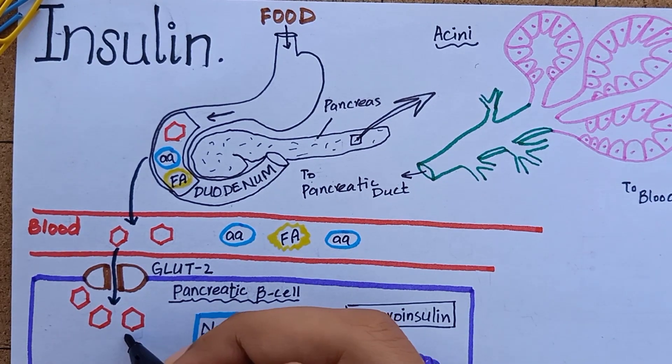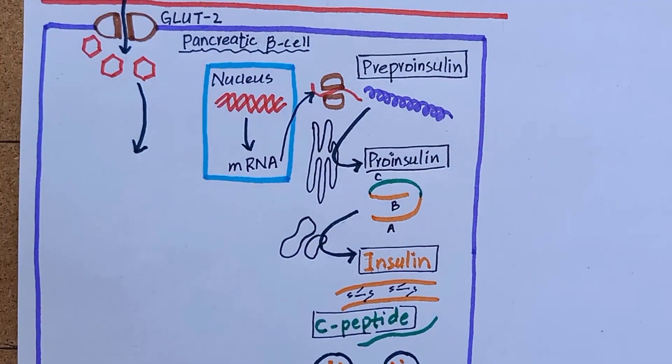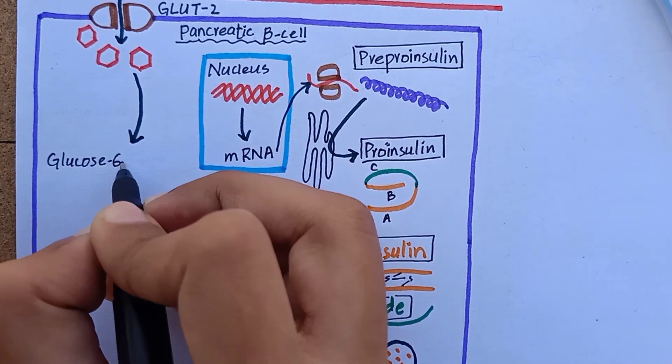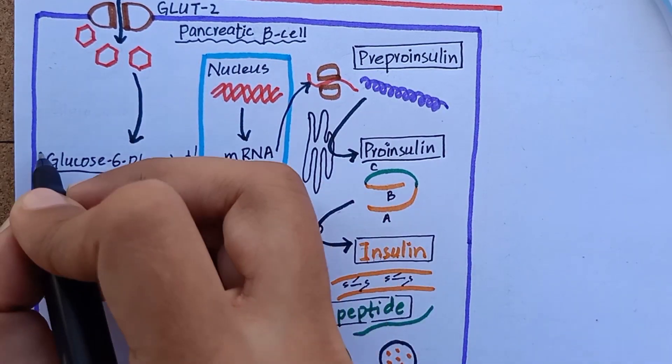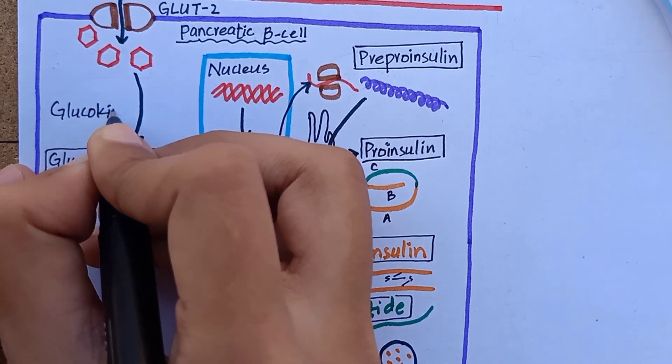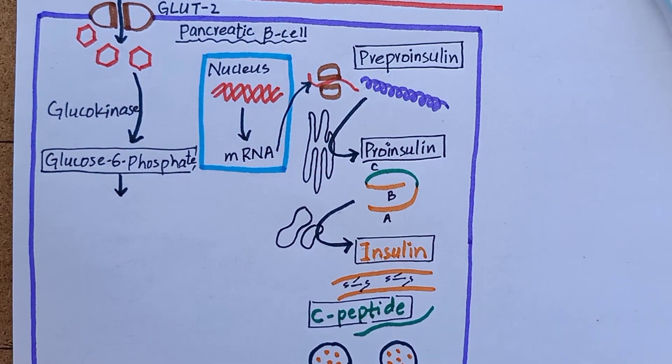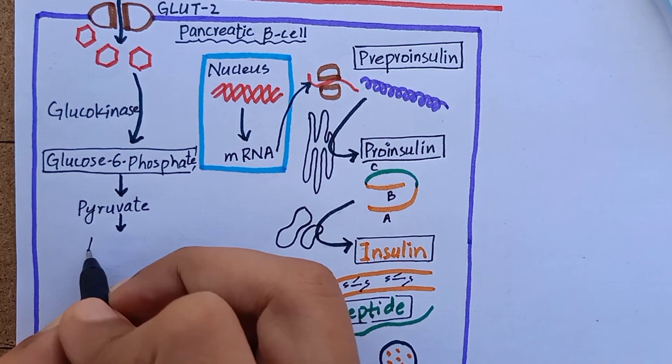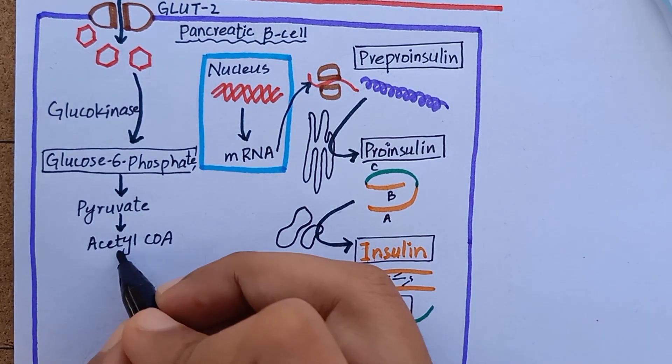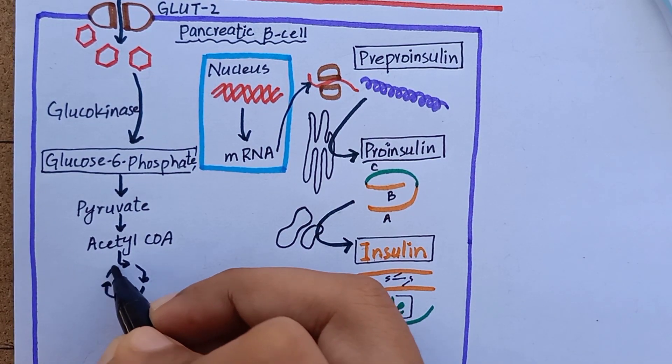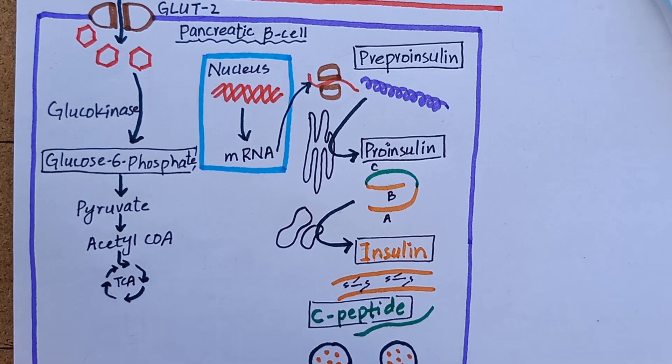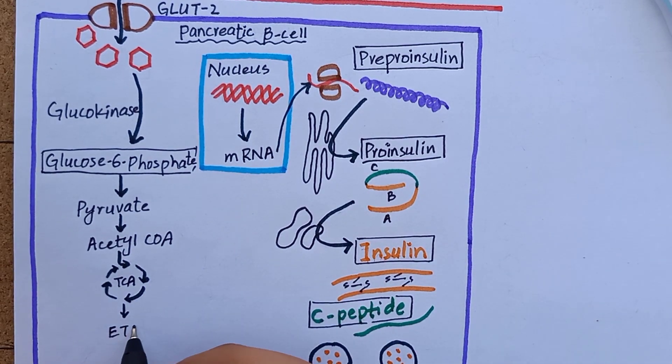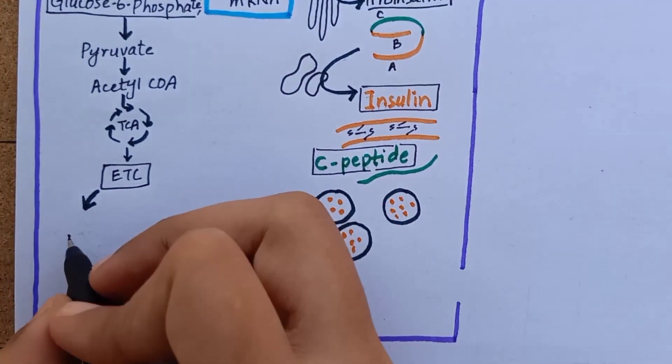Once inside the cell, glucose is phosphorylated to glucose-6-phosphate by the enzyme glucokinase. Glucose-6-phosphate then undergoes the whole metabolic pathway of glycolysis that converts it into pyruvate, acetyl-CoA, then Krebs cycle or tricarboxylic acid cycle and then oxidative phosphorylation by electron transport chain generating energy in the form of ATP.